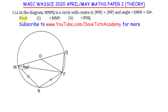In this question on circle theorems, we are told that in the diagram, MNPQ defines a circle with center O, and line MN is equal to line NP. You can see they are being notched together to show that they are of the same length. And then angle OMN is 50 degrees. We are asked to find angle MNP and angle POQ.